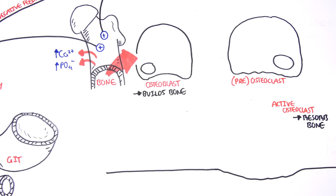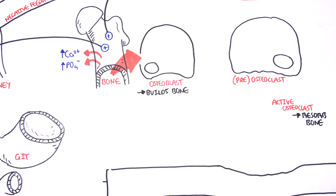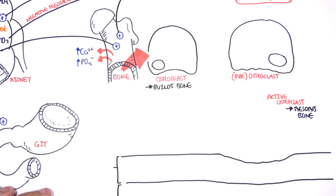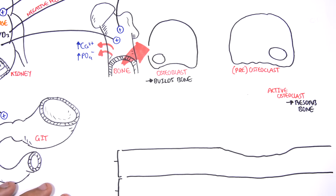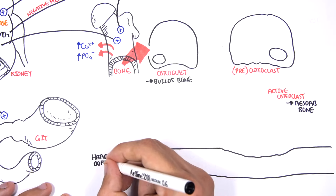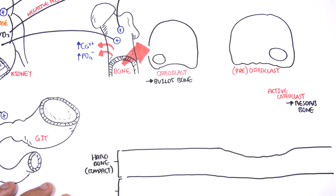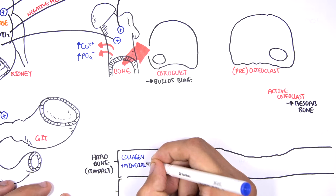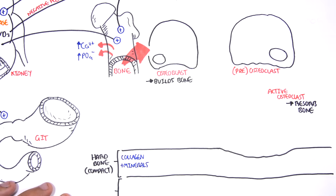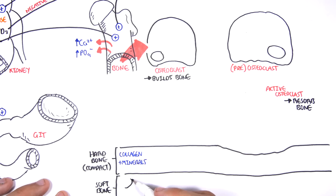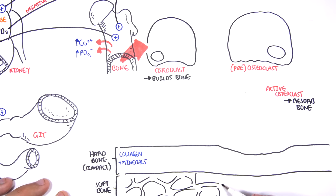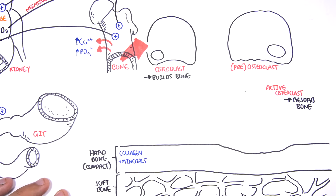Here I'm drawing a simplified diagram of bone. On the outside we have hard bone — compact bone — which contains collagen as well as minerals; this is essentially what bone is made up of. On the inner part we have soft bone, the medullary region.